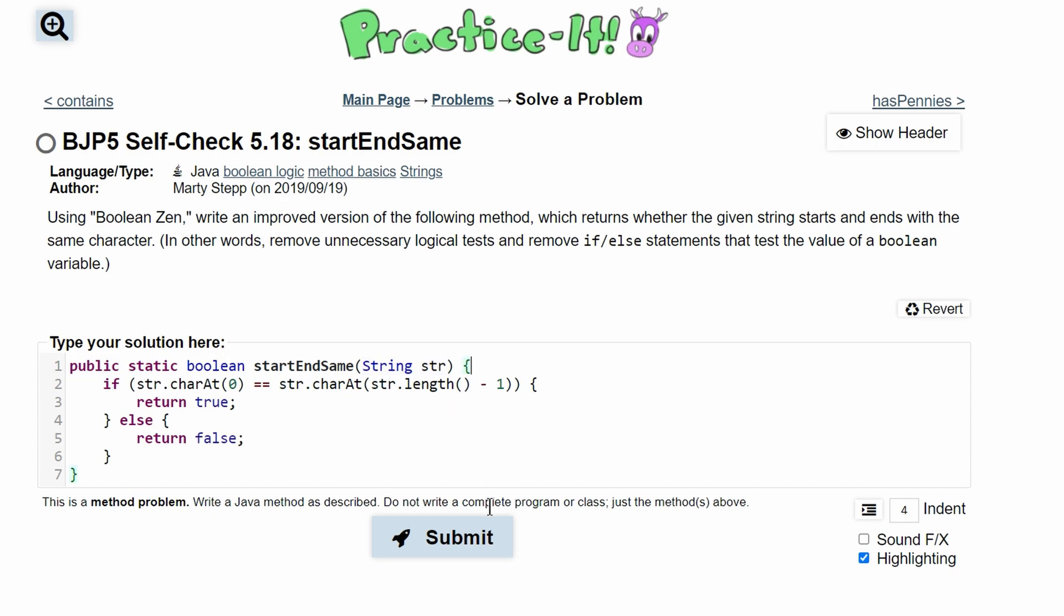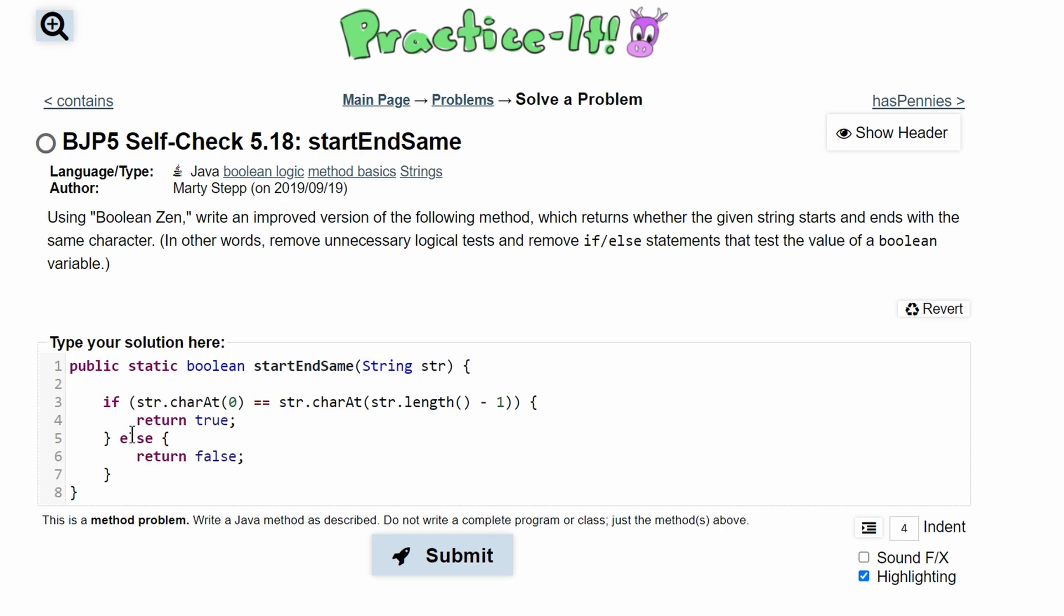So what we can do is start by looking at our string: str.charAt(0), which is the first character in the string, and check if it equals str.charAt(str.length()-1), which would be the last index. This comparison being equal to each other is a statement, so we can actually just return that.